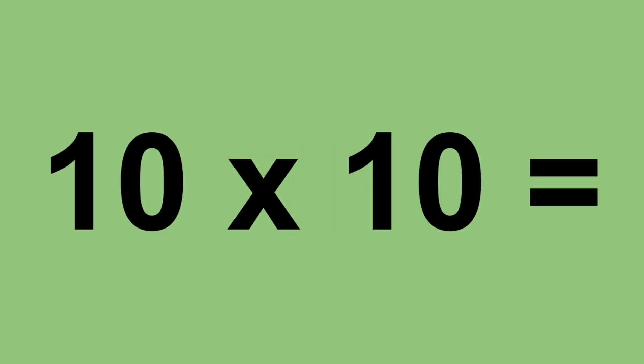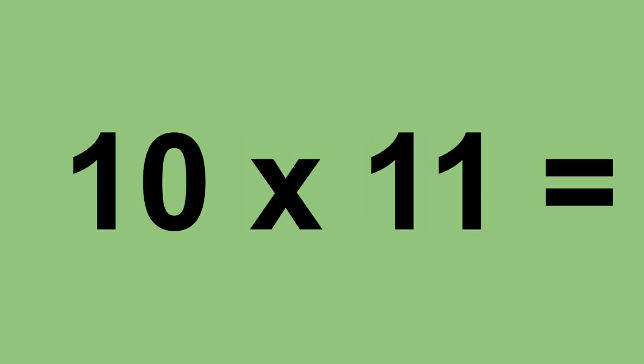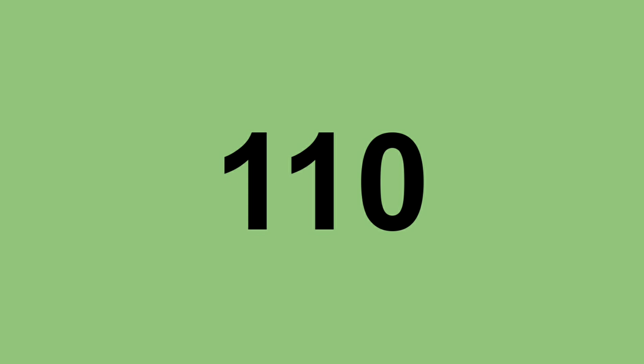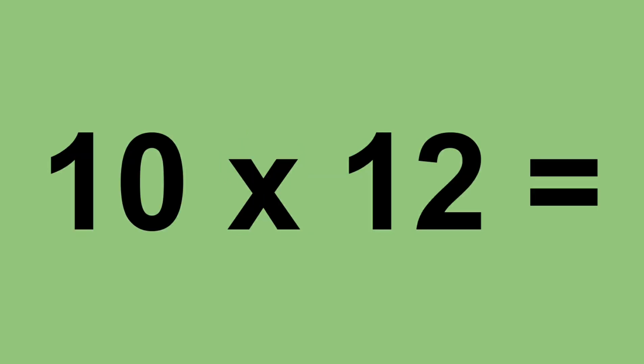Ten times ten equals one hundred. Ten times eleven equals one hundred and ten. Ten times twelve equals one hundred and twenty.